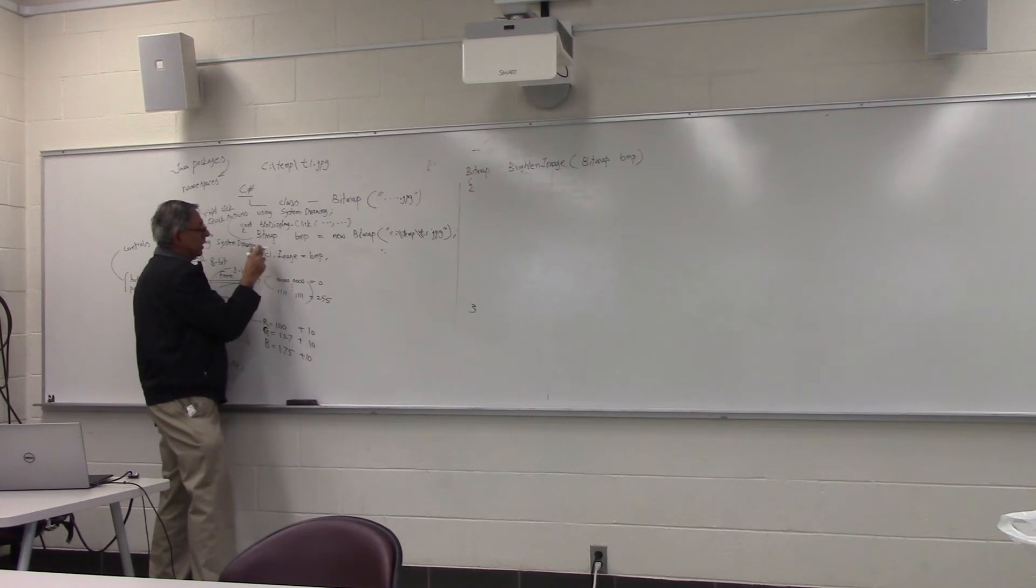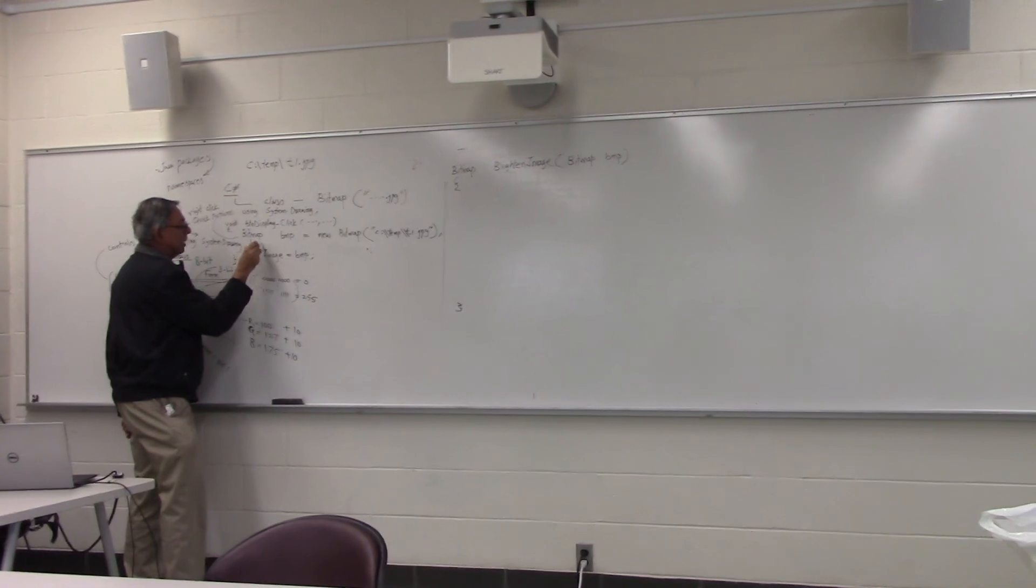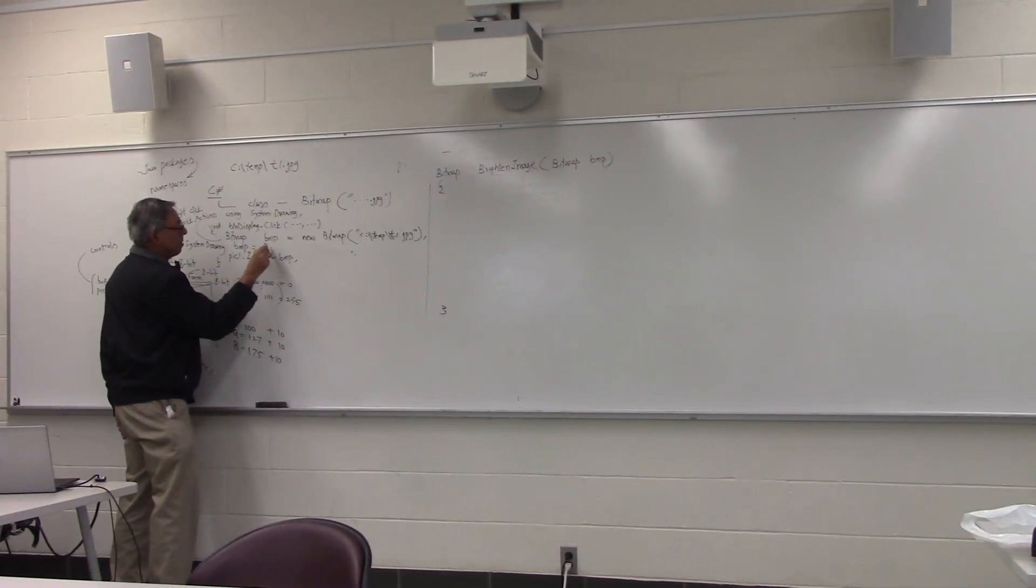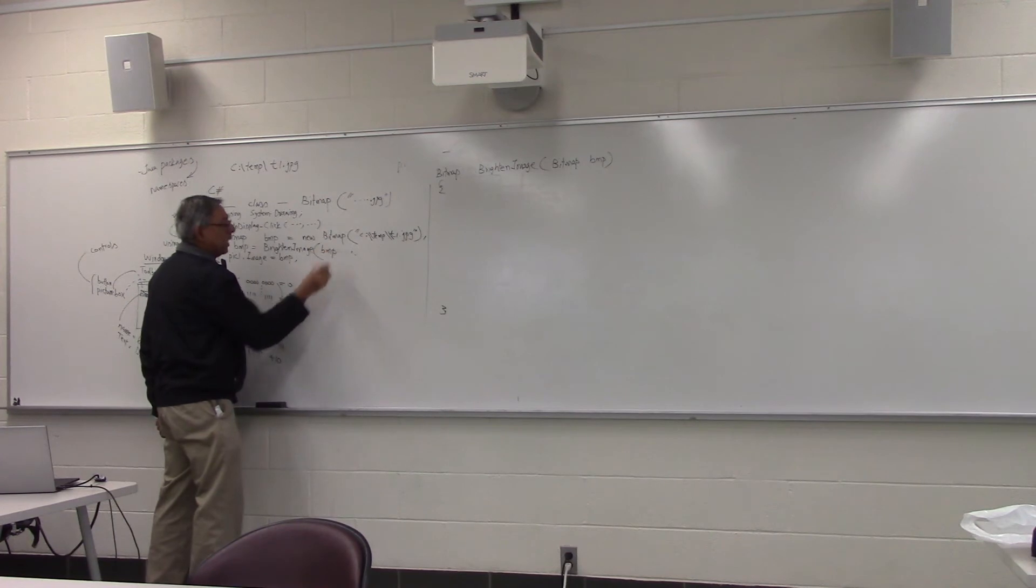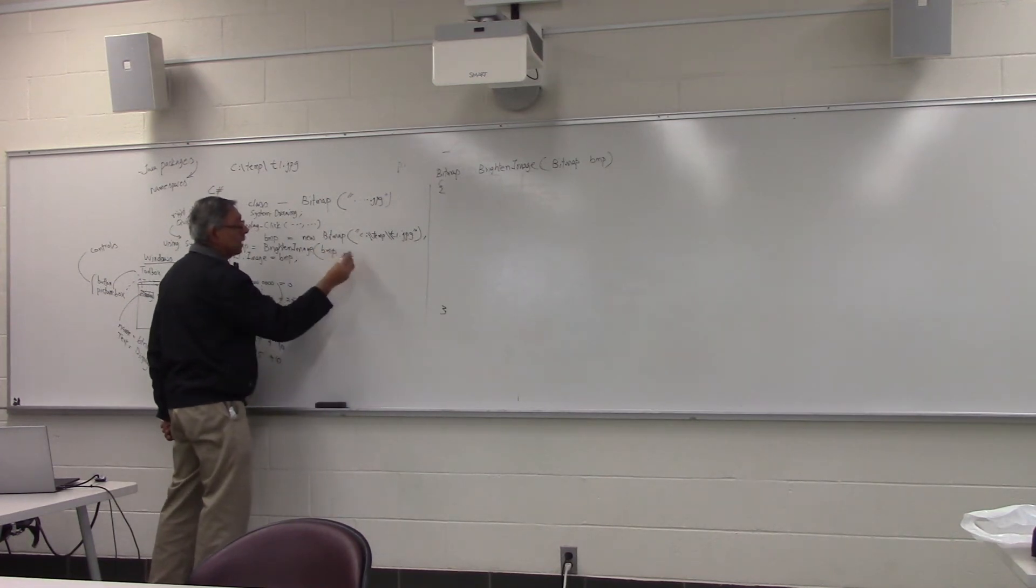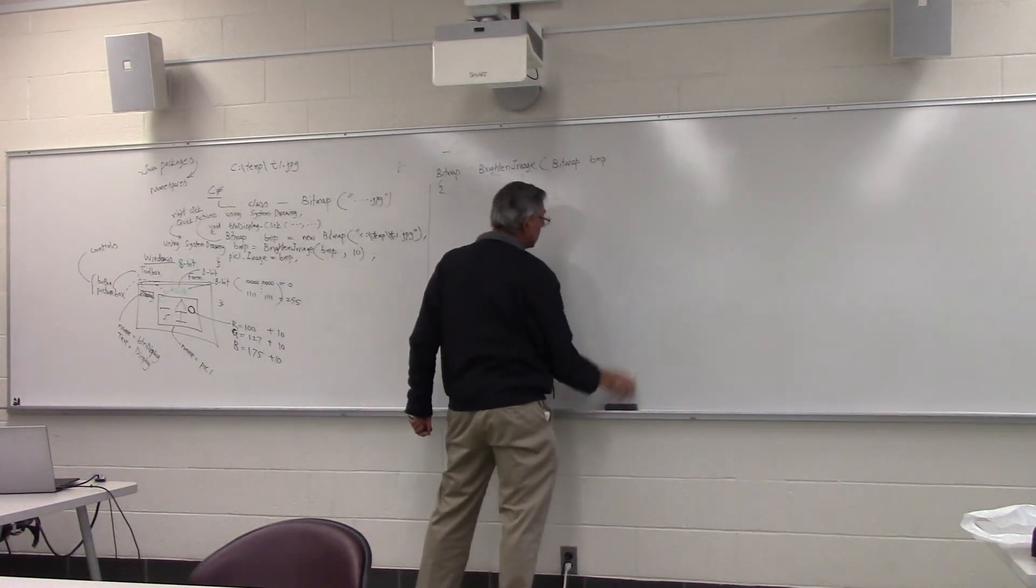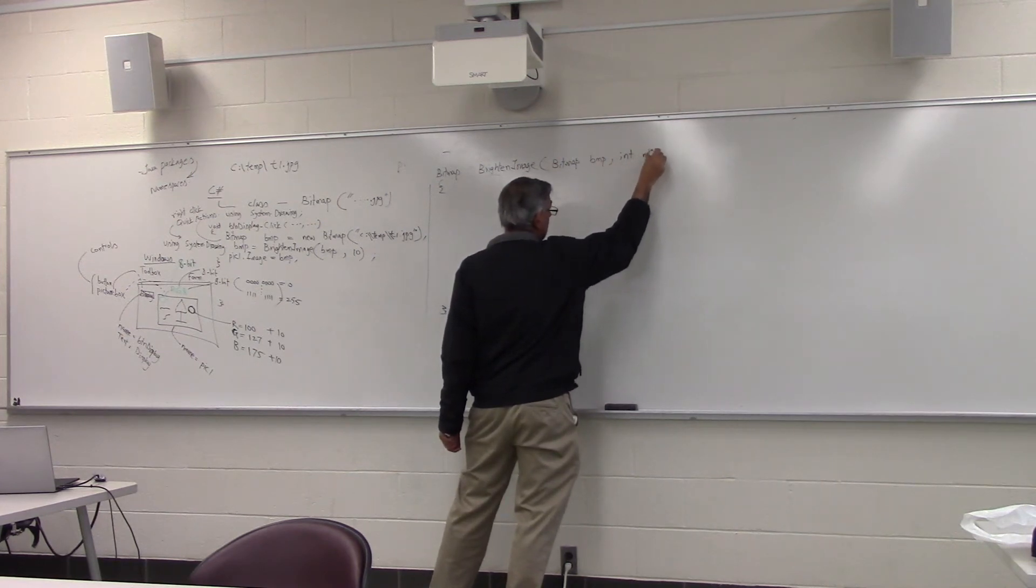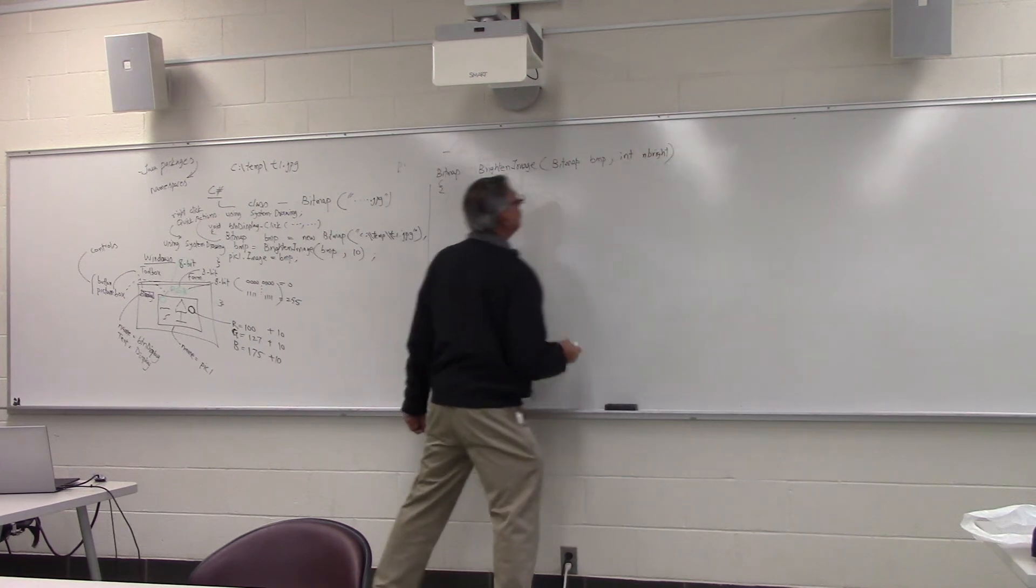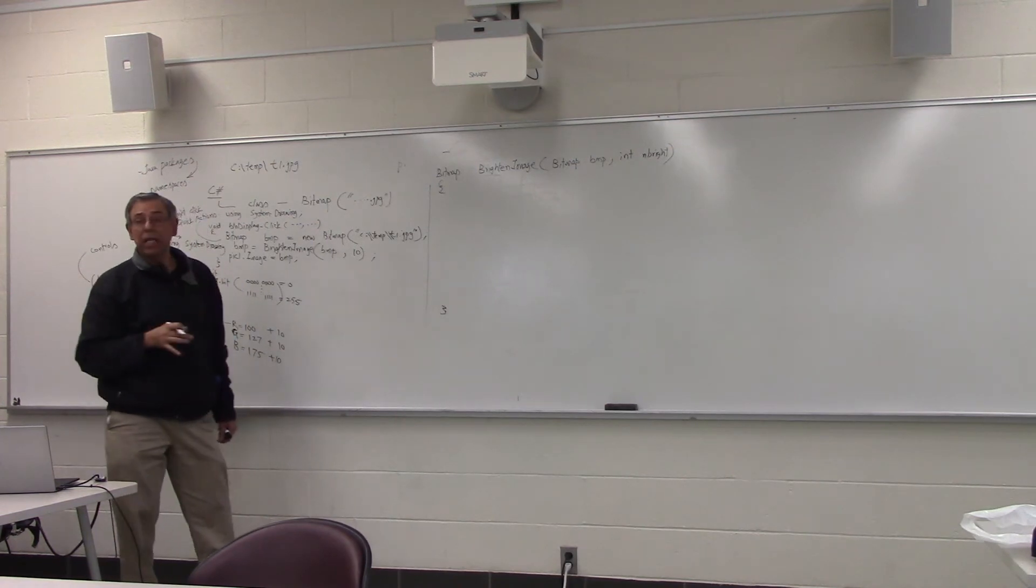Let's pretend somebody has already decompressed the JPEG file. Now what they will do is they will call our function. They will say, for example, BMP equal to brighten image. They will pass the BMP. And they will also tell us how much to brighten it by. Let's say 10. Let me put one more parameter, int n bright. Meaning a number to brighten each pixel by that value.